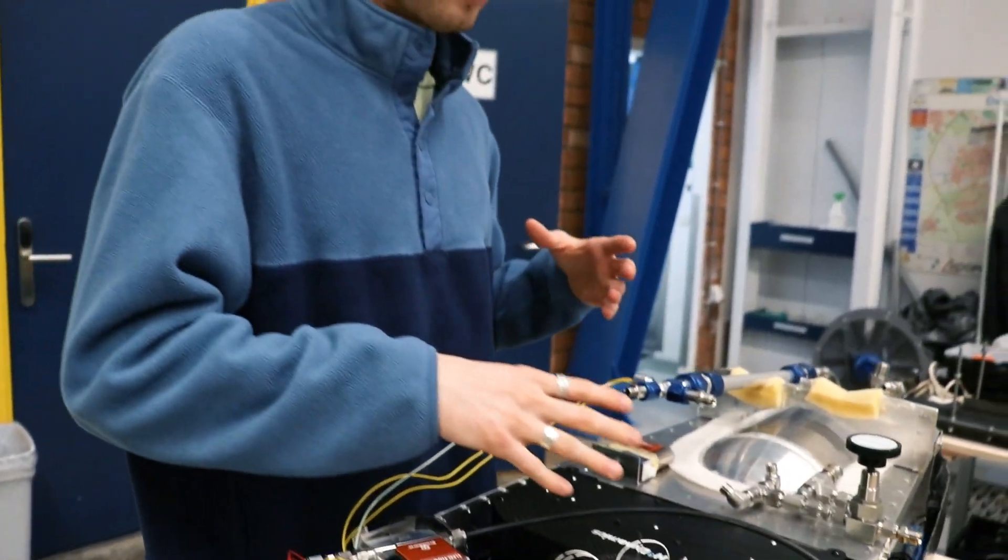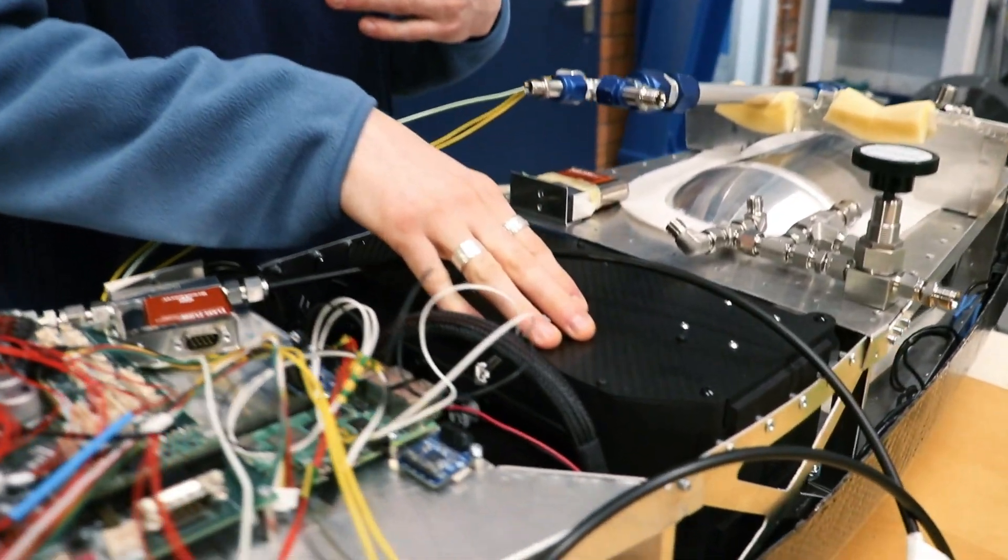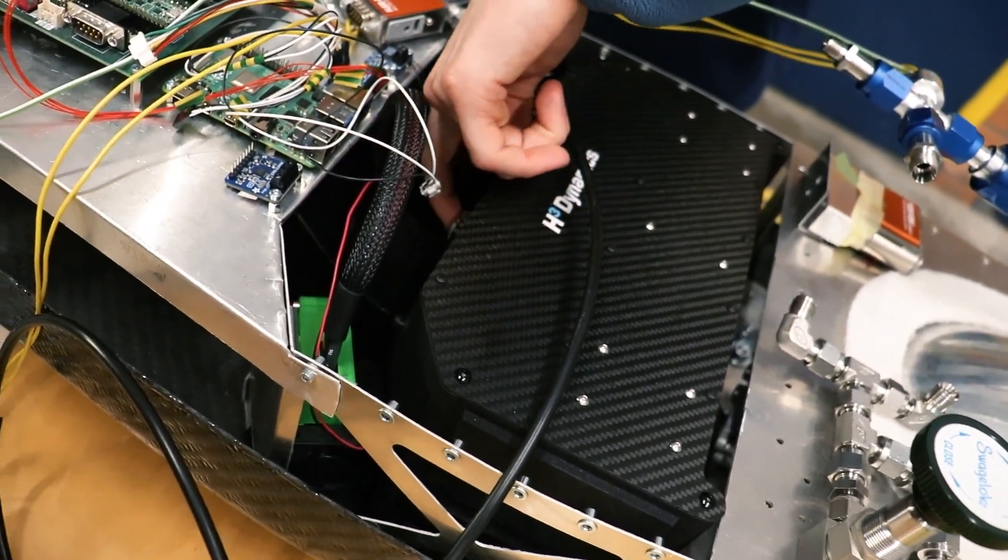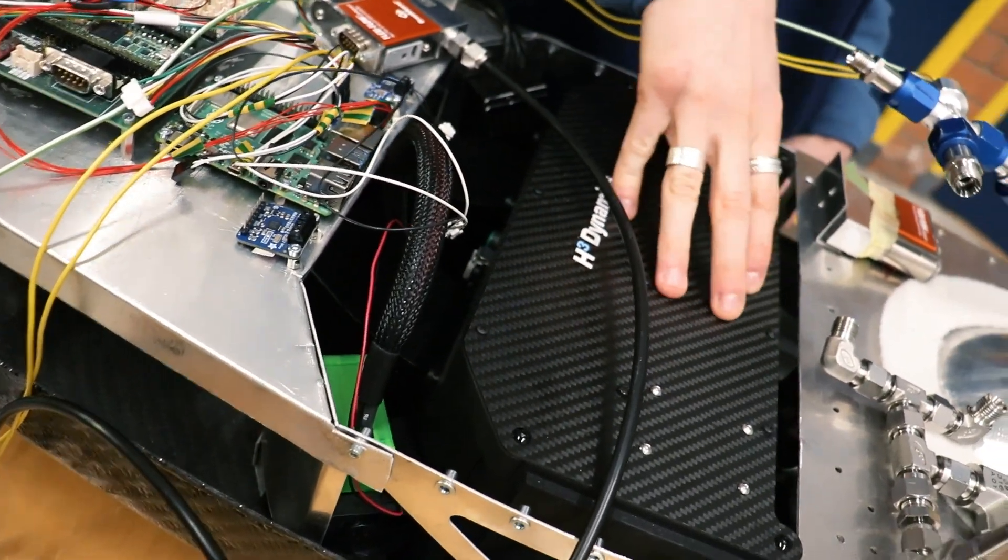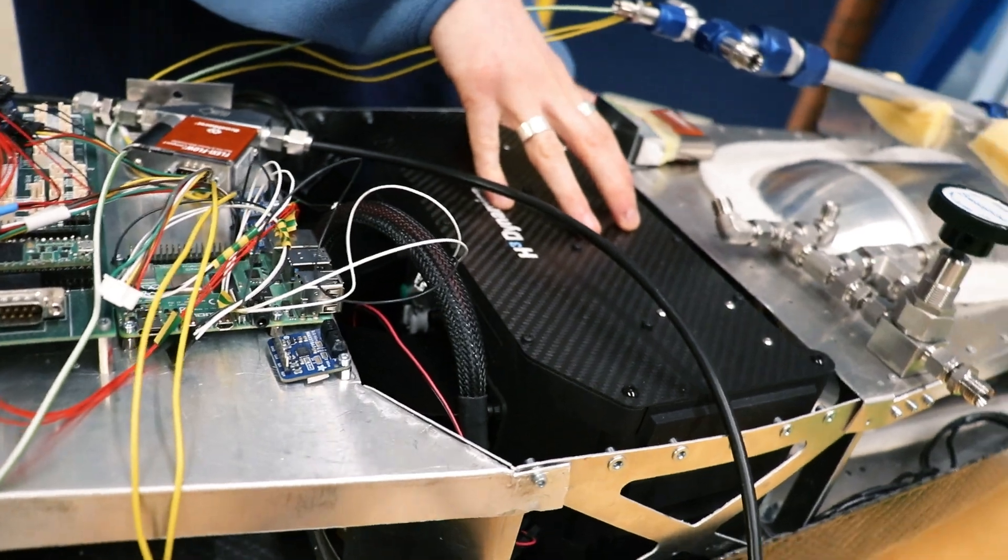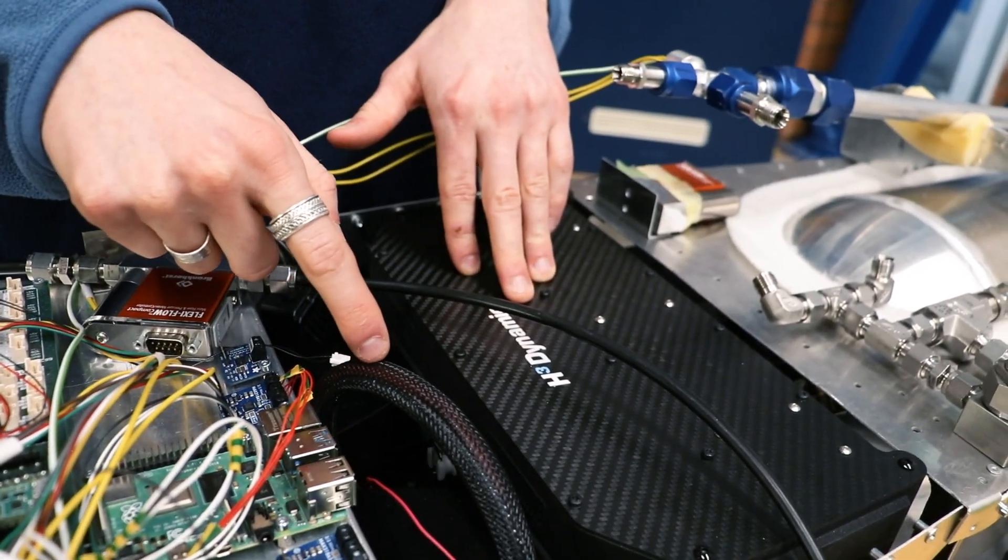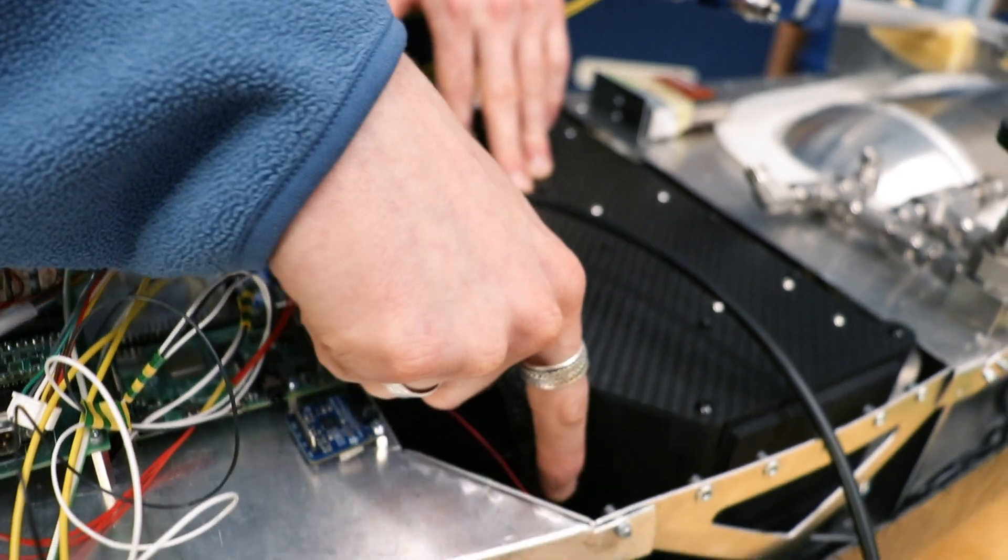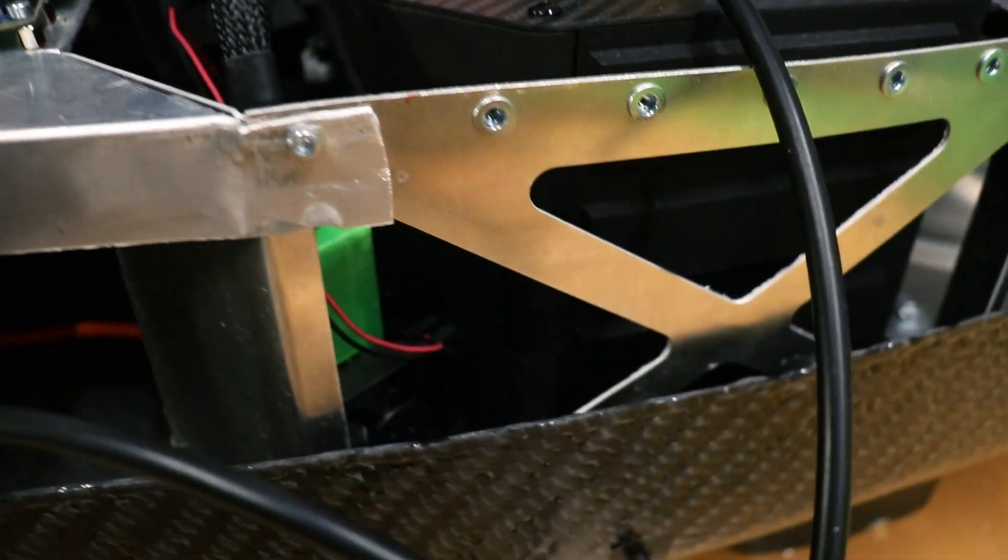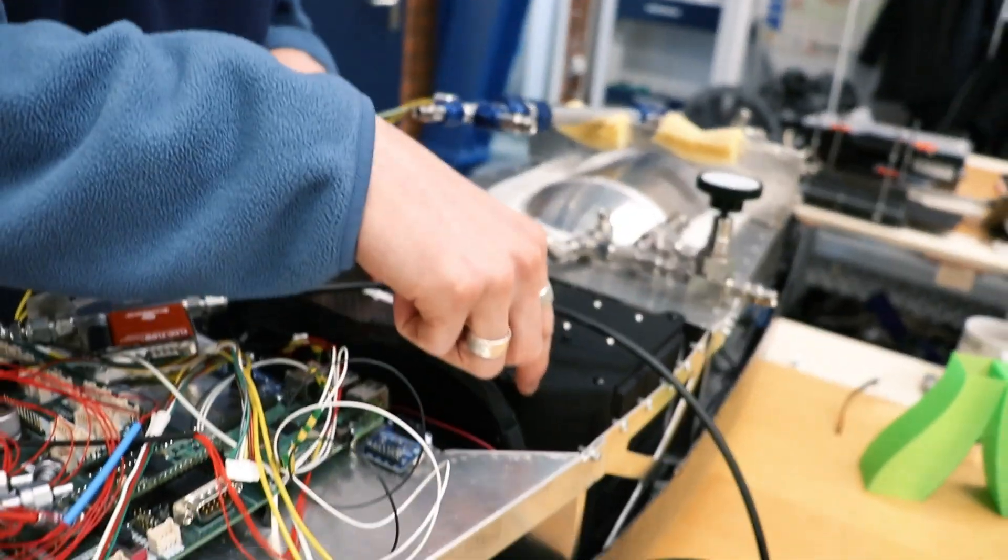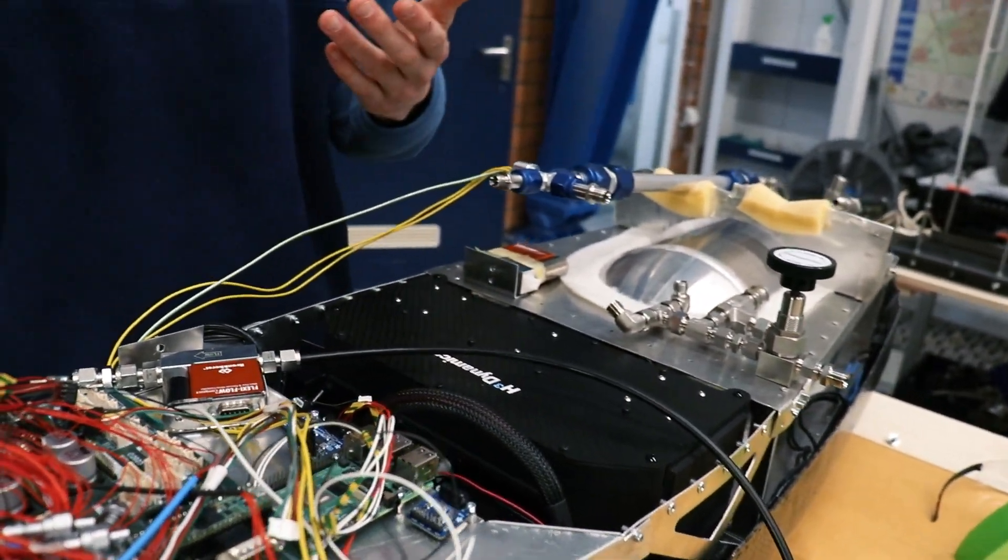We can now move on to the fuel cell section of the power chain. This is our fuel cell. Basically in here is where the hydrogen gets inputted, and this thing will turn the hydrogen into electricity by combining it with air it takes from the atmosphere. We get DC power out of the fuel cell and it goes here into this little box which we call the hybrid card. Basically this is where the power from the fuel cell and our batteries get combined so that it can be sent to the rest of the system.